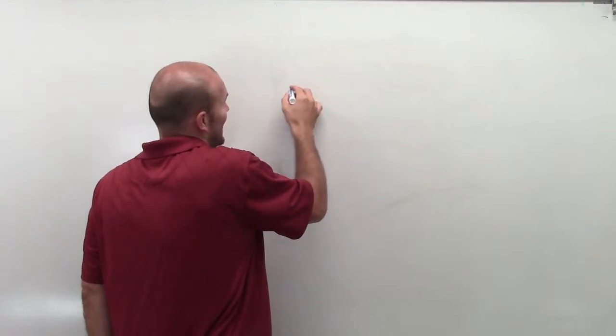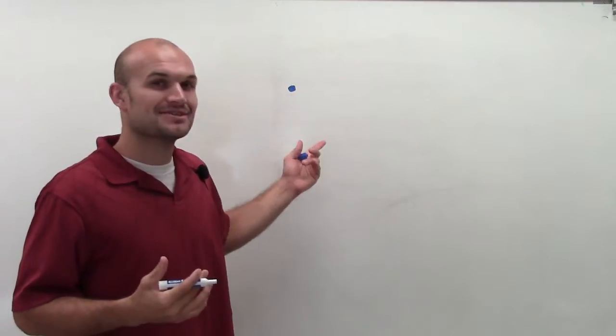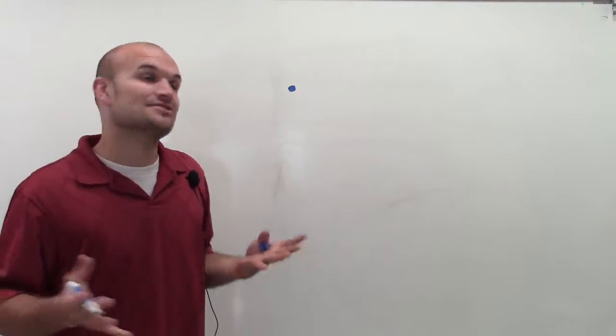And a point is pretty much a dot. But here's the thing you need to understand. You can see this dot, but actually, it's a dot that really has no size.